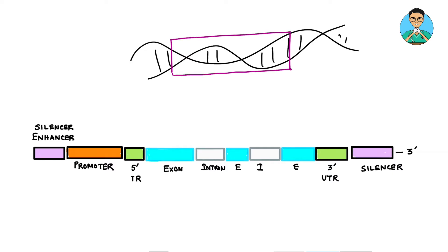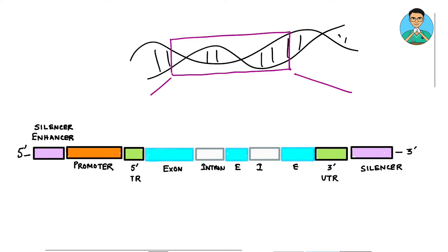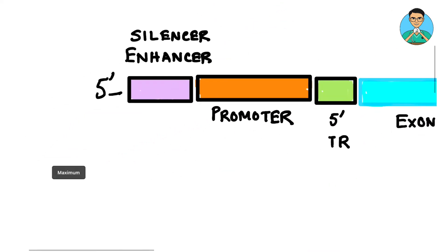Now we have demonstrated this part of the gene over here like this. So it starts from the 5' end and goes up to the 3' end. So in the 5' end we have a silencer or enhancer. So what does this silencer or enhancer do?